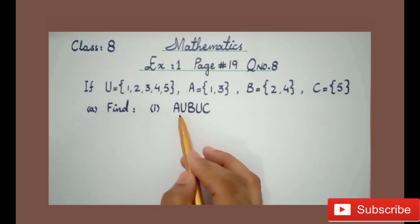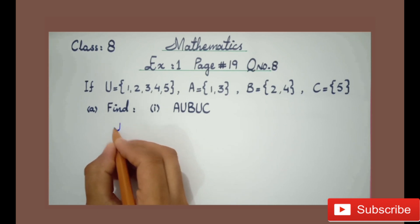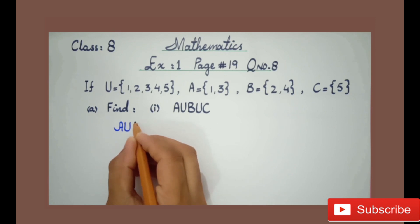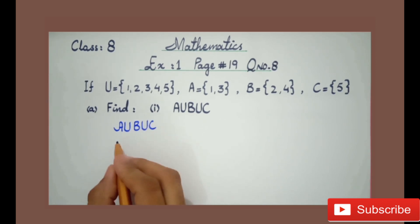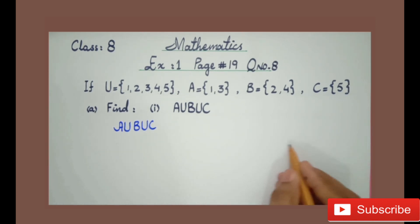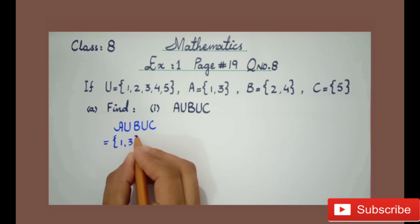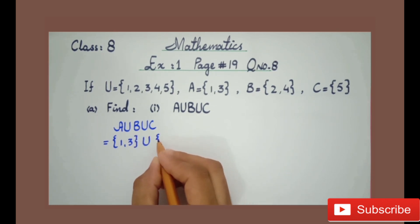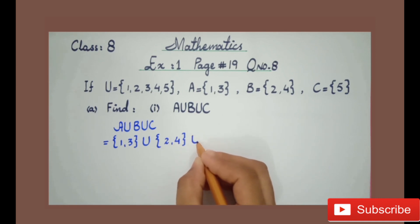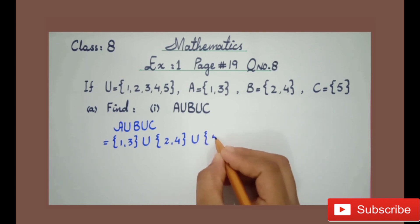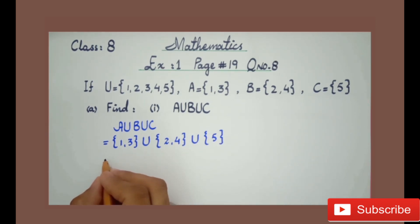We will find part 1: A union B union C. So first of all we will write our question: A union B union C. According to the question, we arrange our sets. Write set A, which has two elements: 1 and 3. Then put the union symbol, then set B with 2 and 4. Then union symbol, then set C which has only one element: 5.